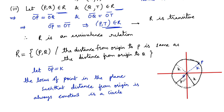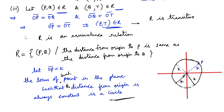Anywhere you consider, the distance is K. So we can say that the locus of such a point P in the plane, such that the distance from the origin is always constant, is a circle.